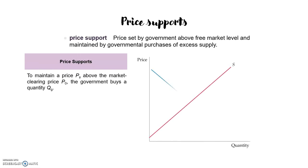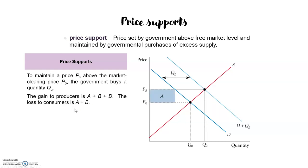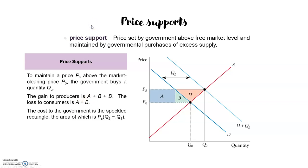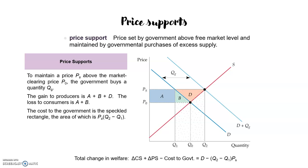Besides setting a minimum price, the government can also regulate the market price by increasing the price of a good in other ways. For example, much of agricultural policy is based on a system of price supports, often combined with incentives to reduce or restrict production. In this part of chapter two we are going to examine how these policies work and their impact on consumers, producers, and the government itself.